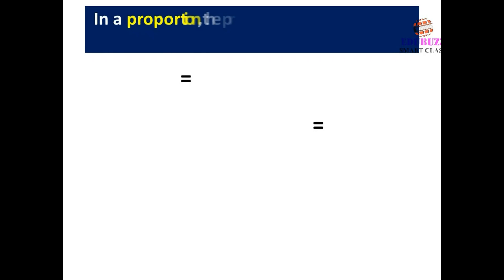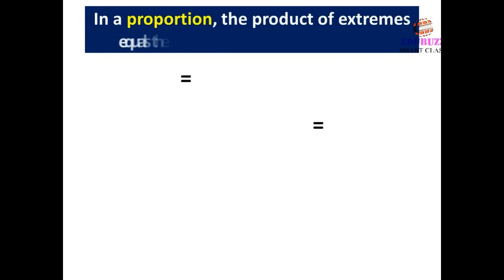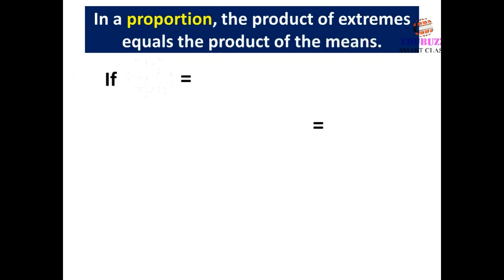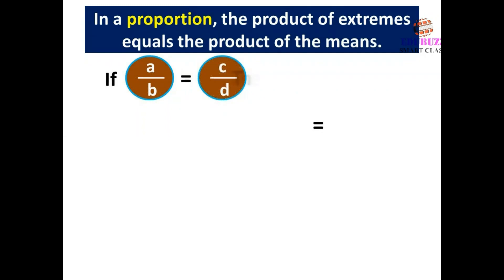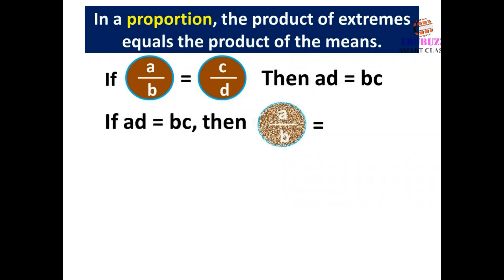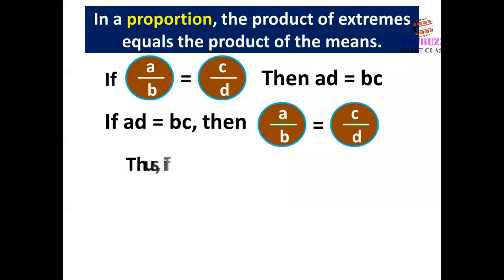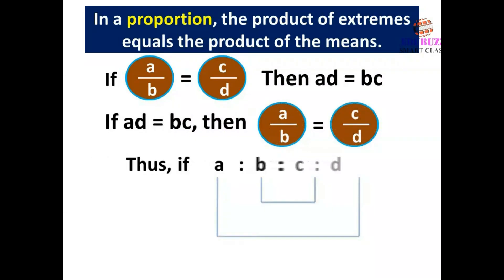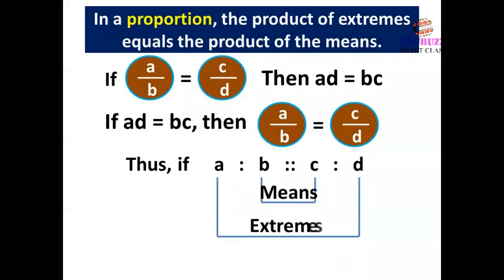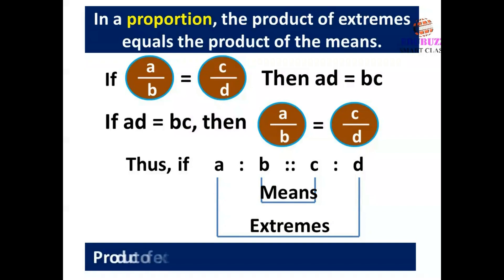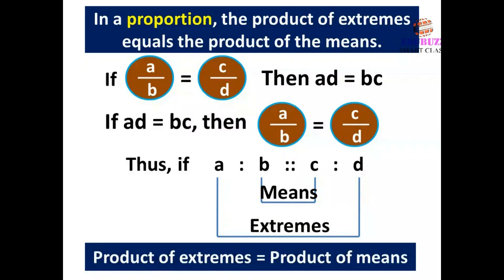In proportion, the product of extremes equals the product of the means. If a/b = c/d, then ad = bc. Conversely, if ad = bc, then a/b = c/d. Thus, if a:b :: c:d, the product of extremes equals the product of means.